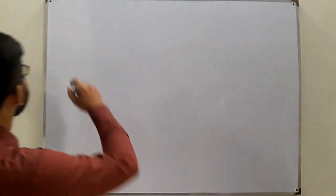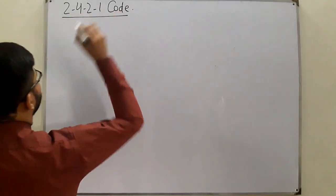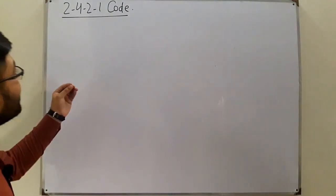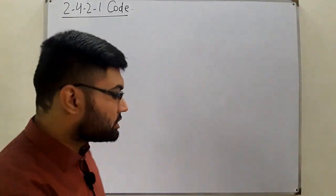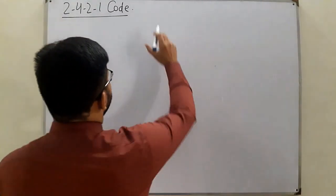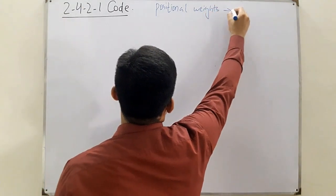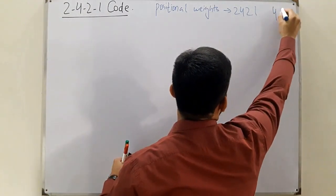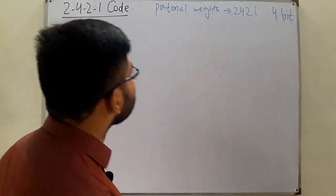Bismillahirrahmanirrahim, Assalamu Alaikum. Tala Khan here, and today we discuss the 2421 code. We've seen the 8421 code and the Excess-3 code, and today it's the 2421 code. By the name, it's clear that the positional weights in this code are 2, 4, 2, and 1. Similar to the previous ones, this is a four-bit code used to represent the decimal digits from zero to nine.